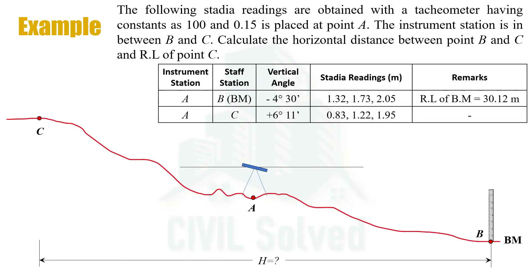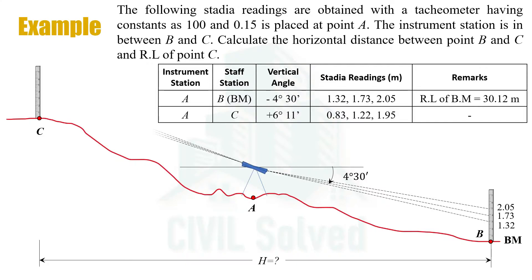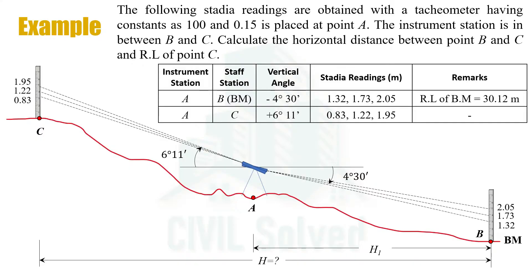The instrument station is point A and this is the axis of the instrument. The staff readings and angles are given for both setups. In order to calculate the horizontal distance, this setup is divided into two parts: the first part is the distance between point A and point B as H1, and the second part is the distance between point A and point C as H2.